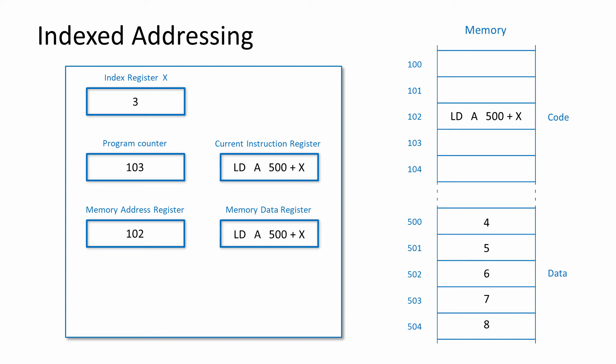With indexed addressing, the operand is a base memory address and the effective memory address is calculated by adding to it the value in a processor register known as the index register, denoted here by the letter X. Indexed addressing is particularly useful when accessing the contents of contiguous memory locations — that is, what was originally an array variable in the source code. By incrementing the contents of the index register, which is normally done within a loop, the elements of an array can be accessed sequentially. Here you can see the contents of an array variable in memory. The instruction adds 3 to address 500, which contains the fourth element of this zero-based array, the number 7.